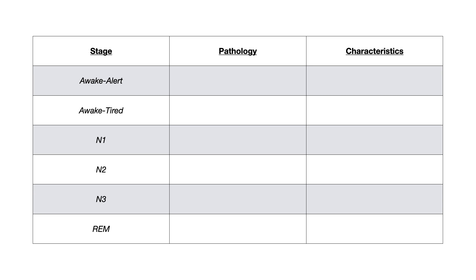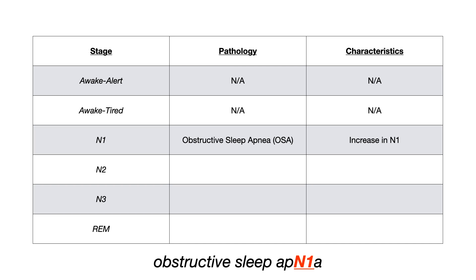The easiest way to approach this is to go through a chart and fill it in. For awake alert and awake tired there's no pathology, so we'll skip those stages. In N1, this is affected by obstructive sleep apnea - when somebody has obstructive sleep apnea it actually increases their N1 sleep. The mnemonic: write 'obstructive sleep apnea' and replace the 'E' with '1', just like I did for myoclonic jerks.